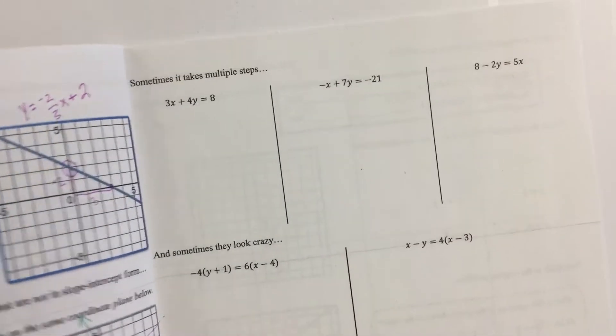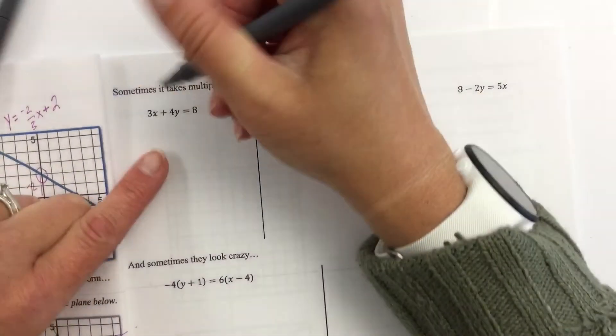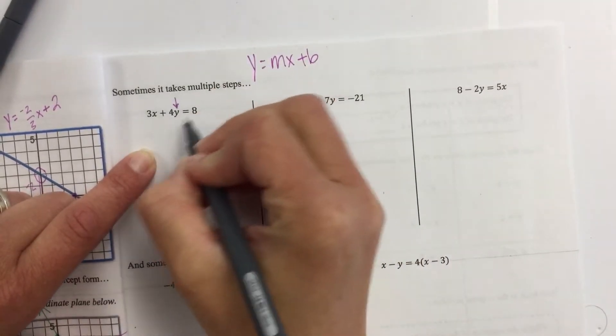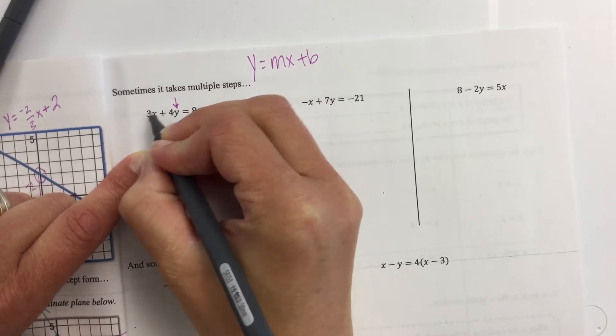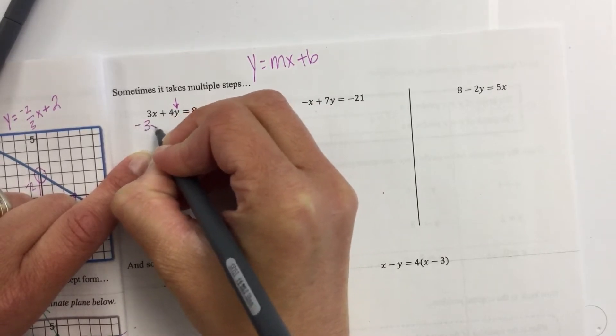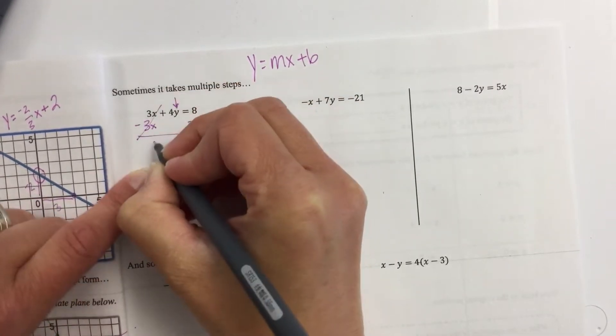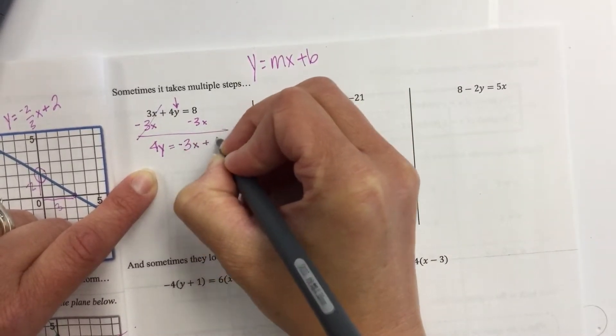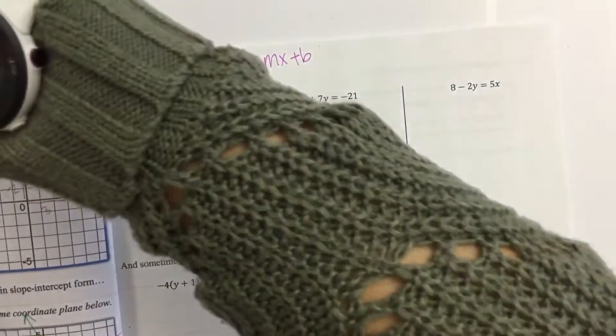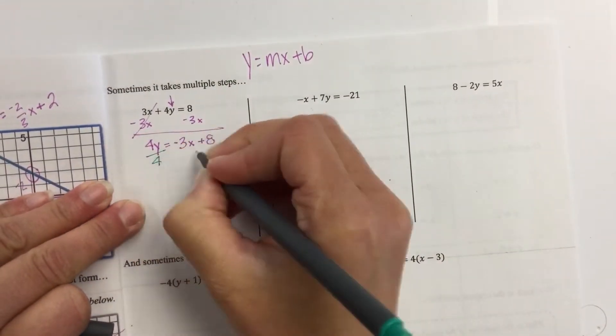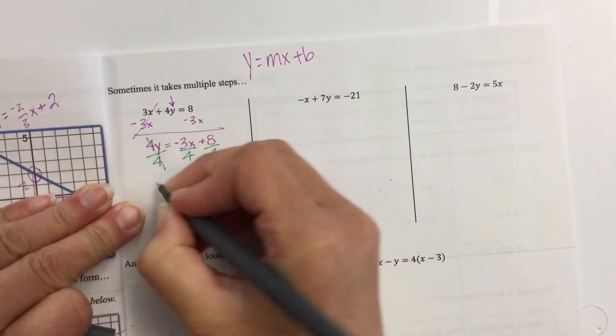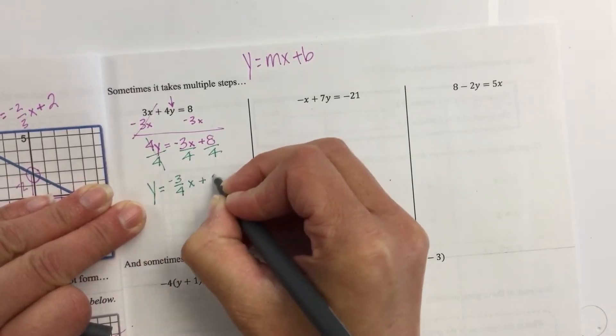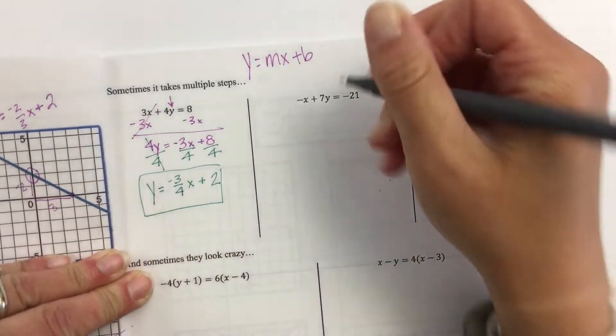Now, we're going to do a couple that are more than one step. Okay, we're still solving for y, of course. Just a reminder, we're going to y = mx + b. So, in this one, remember, you're going to move whoever's furthest away from y first. So, in this one, I would subtract the 3x. So, this is going to be 4y equals, I know my x term comes first, so I write it first. And then my next step would be to get the y alone. So, I'm going to divide by 4. Remember, you have to divide everything by 4. That one cancels. So, y equals, this turns into -3/4x. And then 8 divided by 4 is just 2.